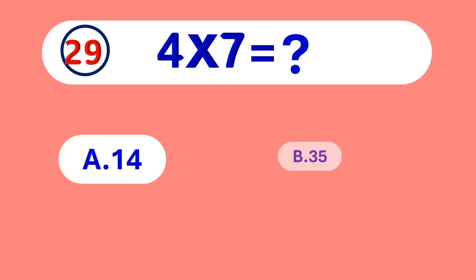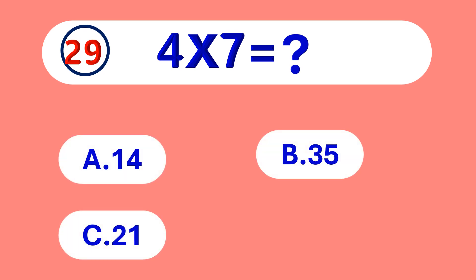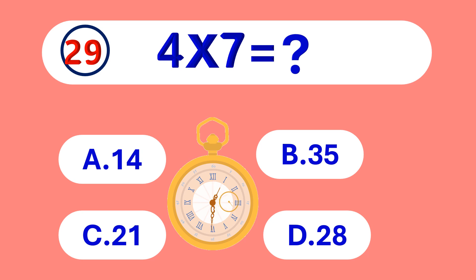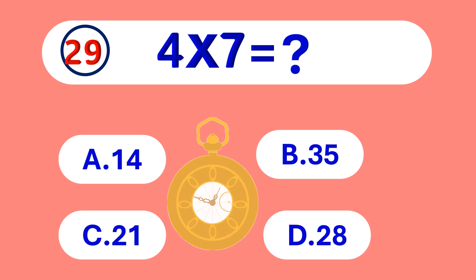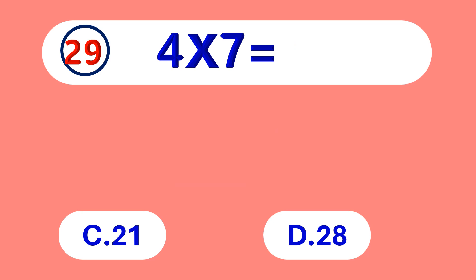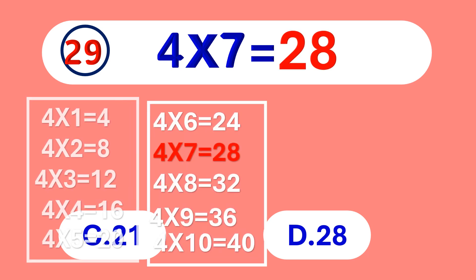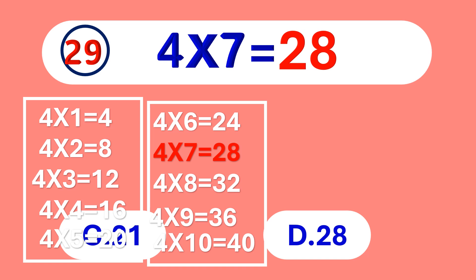4 times 7 is equal to... 28. 4 times 7 is 28.